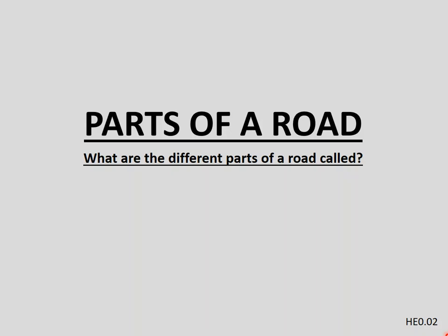In this video we'll look at the parts of a road. We are going to look at a flexible pavement road, which is by far the most common road used in New Zealand. We'll start with an urban road and then we'll look at the parts of a rural road after that.